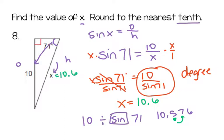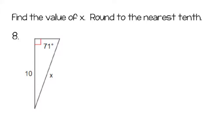Think about what we know about right triangles — the hypotenuse has to be the biggest side. So it's good that it's bigger than 10, because if it was less than 10, we would know that was wrong. Now since I know two of my sides, I could find Y using the Pythagorean theorem, or I could use other trig ratios. Since angles add up to 180 in a triangle, if this one is 71 degrees, then this one has to be the complement — whatever it takes to get to 90 — so that would be 19 degrees.